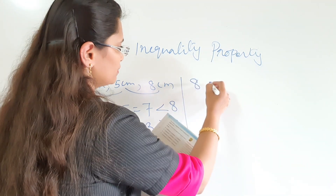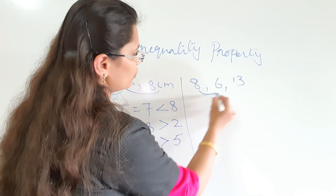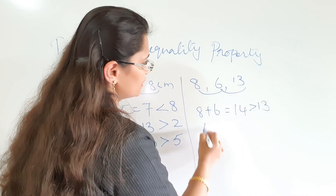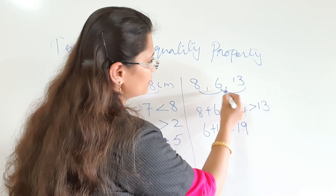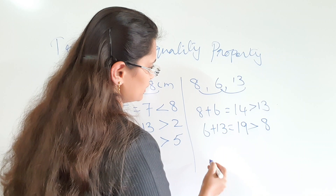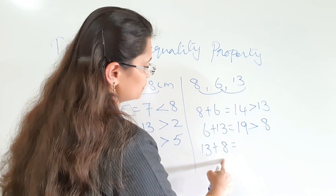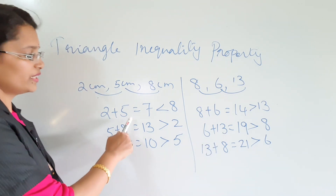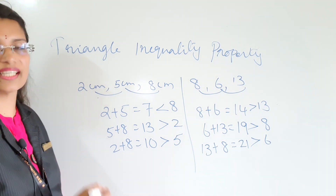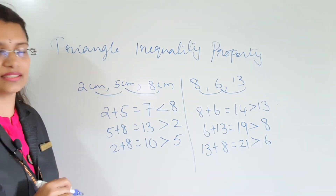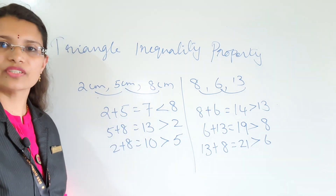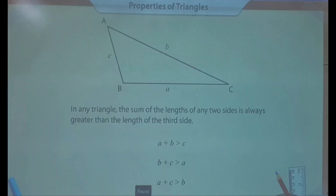Let's check another example: 8, 6, and 13. First two: 8 plus 6 is equal to 14 — greater than the third side. Then 6 plus 13 is equal to 19 — also greater than the third side. Then 13 plus 8 is equal to 21 — also greater than the third side. So in this case we can construct a triangle. In the previous case we cannot, because the sum of two sides was less than the third side. In any triangle, the sum of the lengths of any two sides is always greater than the length of the third side.